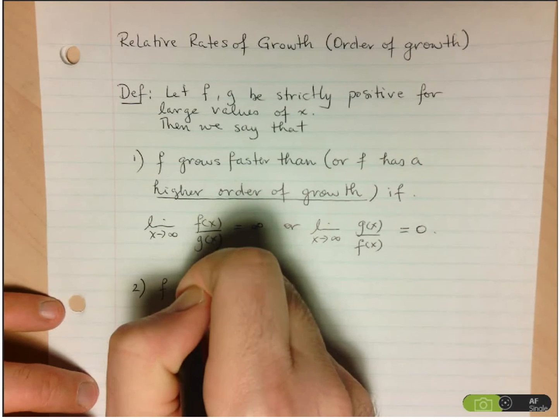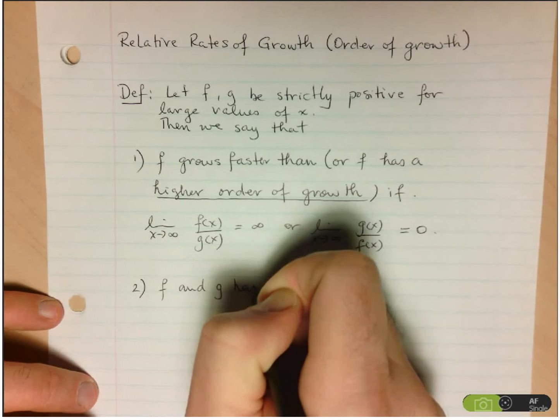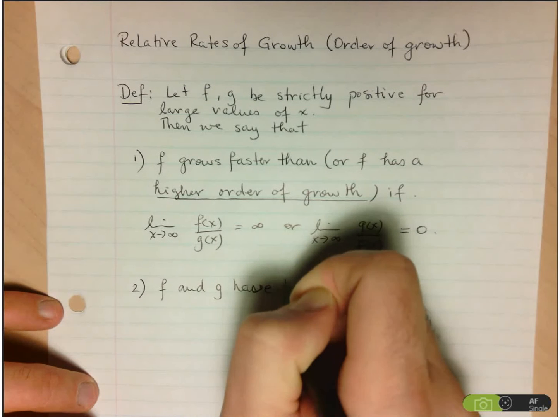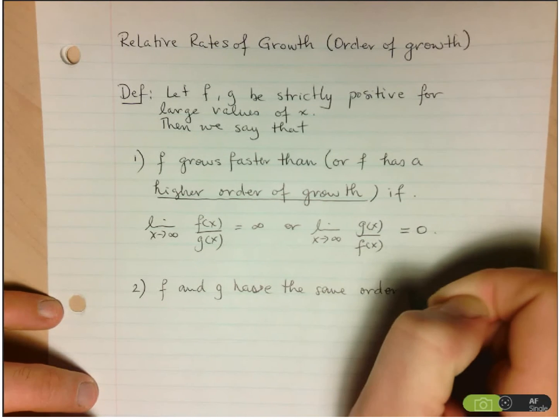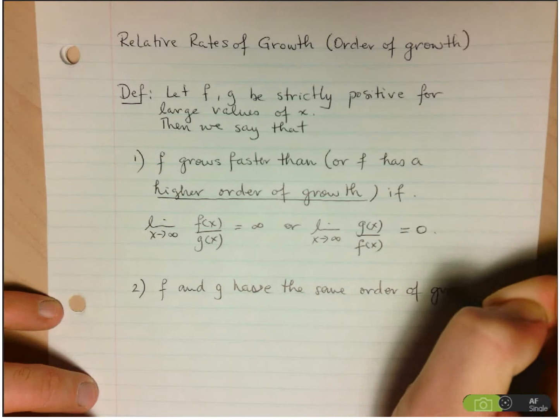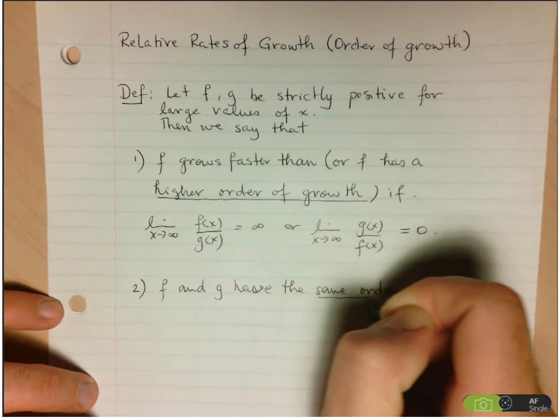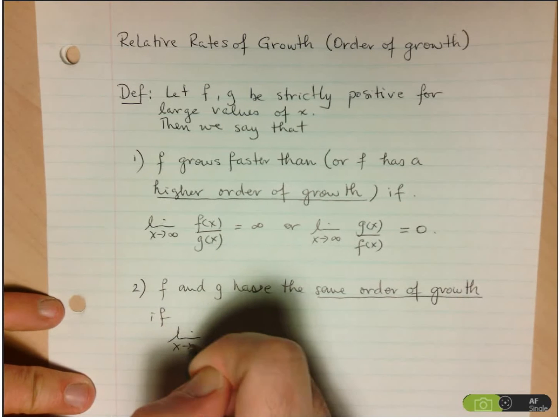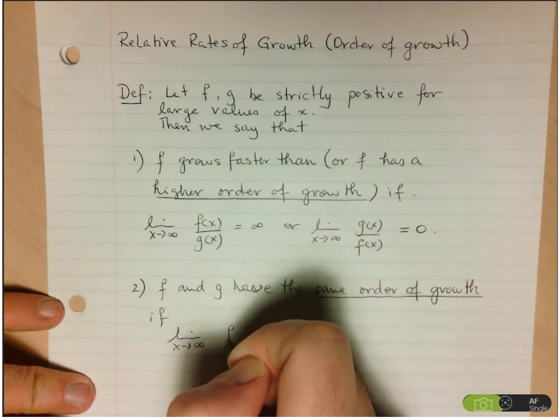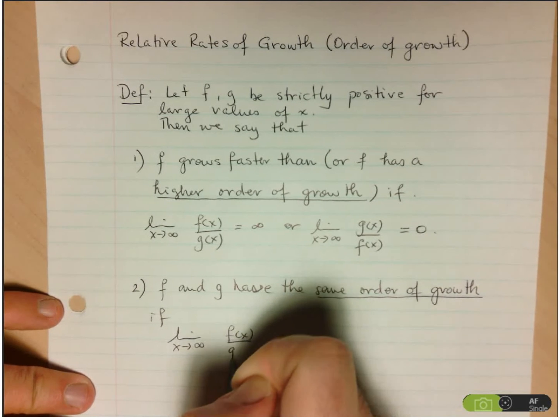So, f and g have the same order of growth if the limit as x goes to infinity of f at x over g at x.